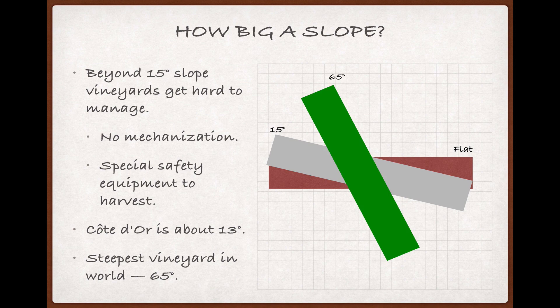At that angle, you need a monorail to get field workers safely to the vines for harvest, and if you want to see what that looks like, check the information section for this video, where I've linked to a video of it, as well as, for reference sake, another video of what it looks like to climb up a 30-degree slope.